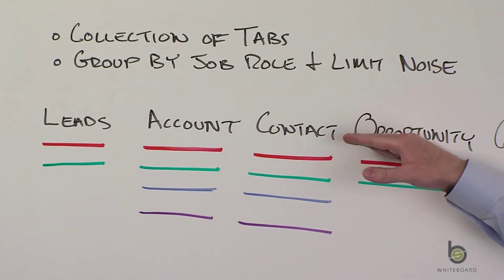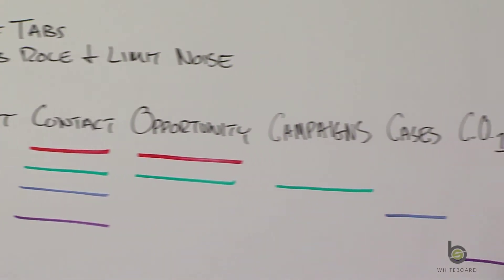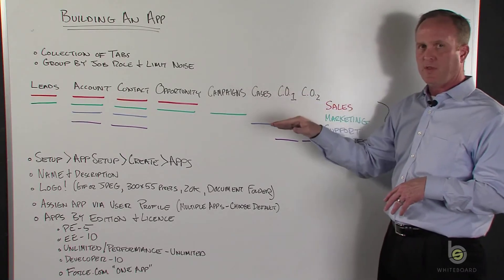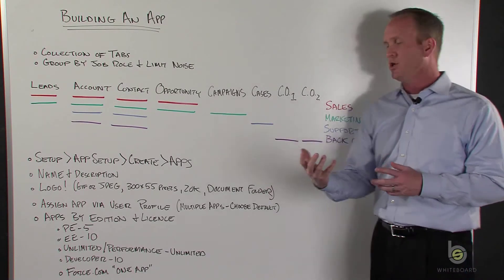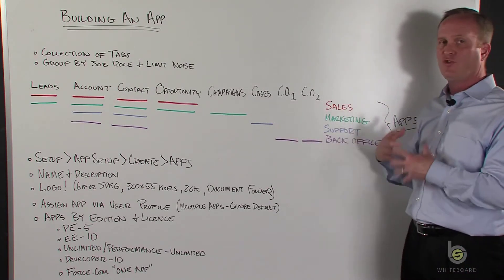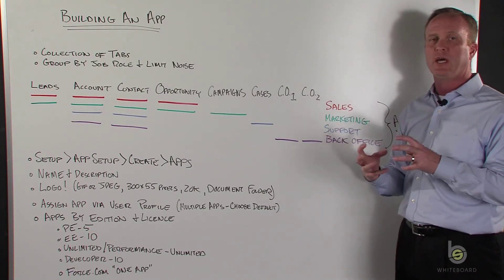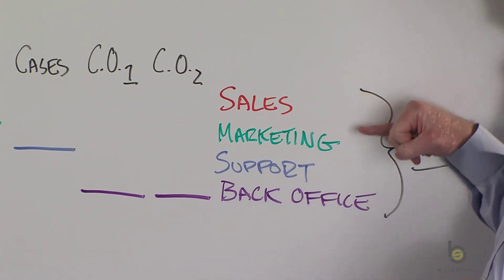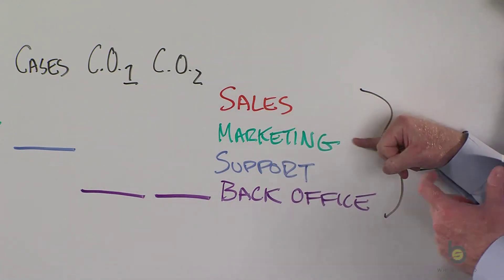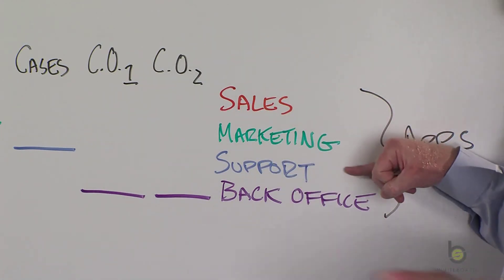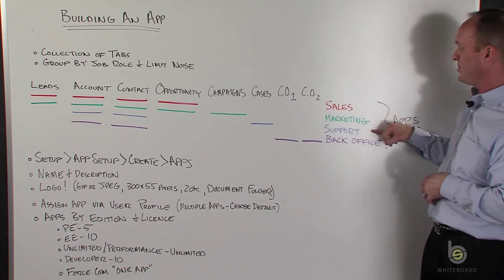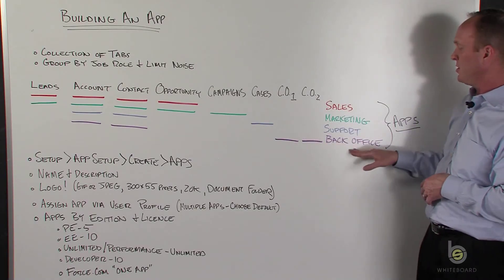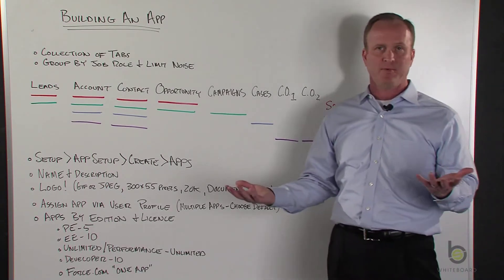On this row, I've labeled out a bunch of tabs: leads, accounts, contacts, opportunities, campaigns, cases, custom object number one, custom object number two. The colored lines below represent which tabs are associated to our custom apps. Our red lines are for tabs included in our sales app. Our green lines underline the tabs available in my marketing app. Blue — accounts, contacts, and cases — are the tabs available for my support app. And the purple — account, contact, custom object number one, custom object number two — are available in my back office app.